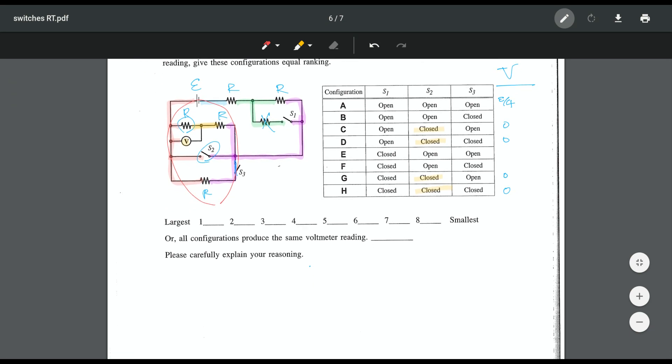Then I'll have 1 over 2R plus 1 over R, and all that to the negative 1. And that is going to give me 1 over 2R plus 2 over 2R is 3 over 2R, or 2R over 3. So I have 2 thirds R for that little network.